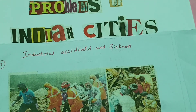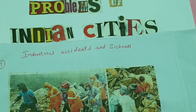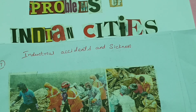The next problem of Indian cities is industrial accidents and sickness. The best example is the Bhopal gas disaster, which affected lots of people. Industrialization sometimes creates accidents due to short circuits and other causes, which in turn cause sickness among people living near these industries.